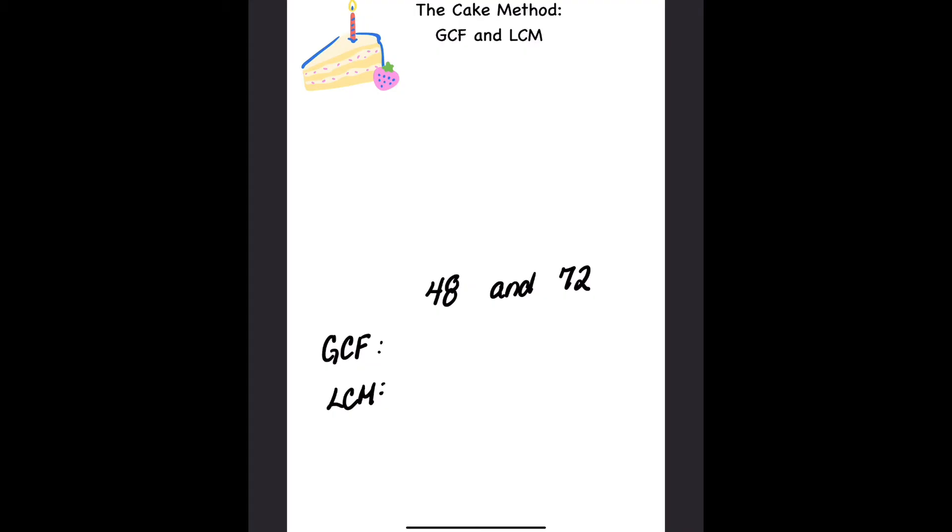Here's how you can use the cake method to find the greatest common factor or least common multiple. It's kind of like dividing with two different numbers. I can divide 48 and 72 by the number two, so I would get 24 and 36.